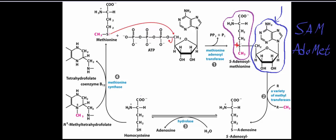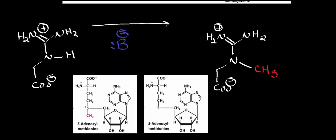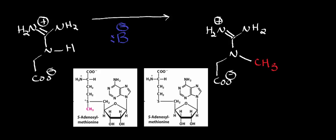Let's start with S-adenosyl methionine and see how it works. The reaction I have here is one you would normally see in biochemistry — it's the reaction of guanidinoacetate methyltransferase. The molecule on the left is the precursor to creatine; in fact, the molecule on the right is creatine. So the molecule on the left is guanidinoacetate.